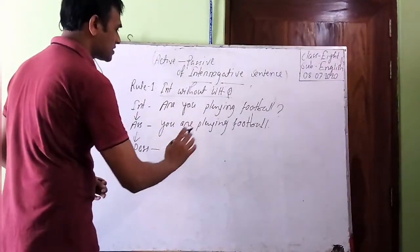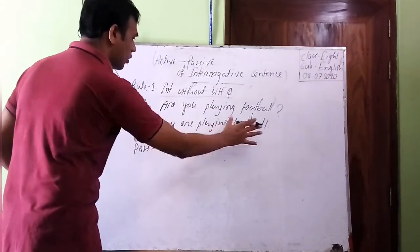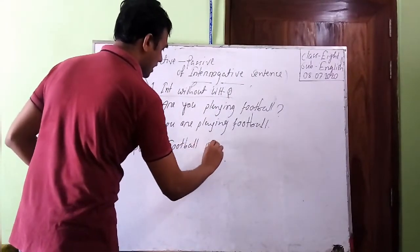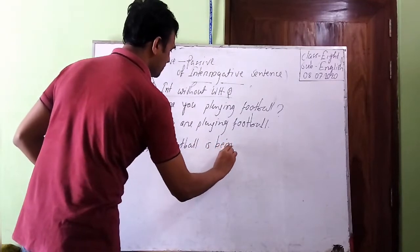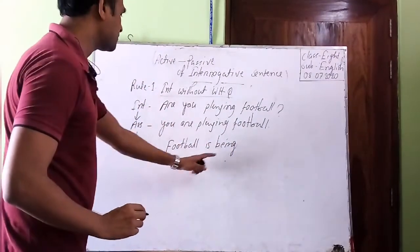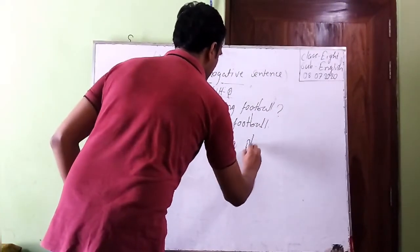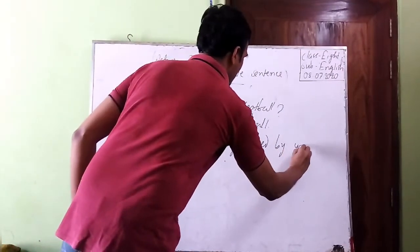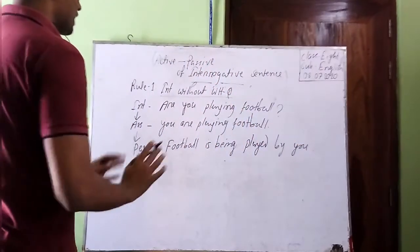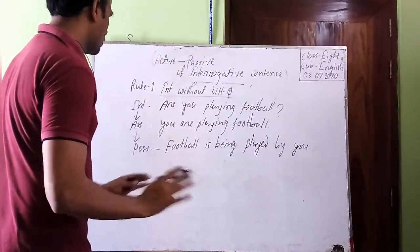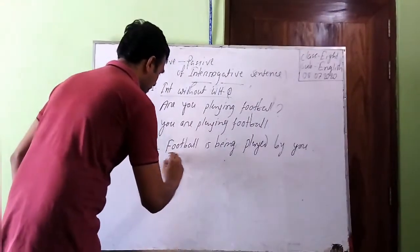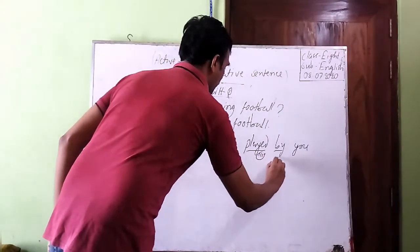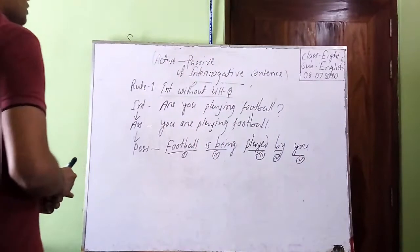The passive form of this sentence will be: 'Football is being played by you.' Here we take the object 'Football' as the subject, then the to-be verb 'is,' then 'being,' then the past participle form of the verb 'play' which is 'played,' then 'by,' then the objective form of the subject. These are the five points, just as we followed in our assertive rules.